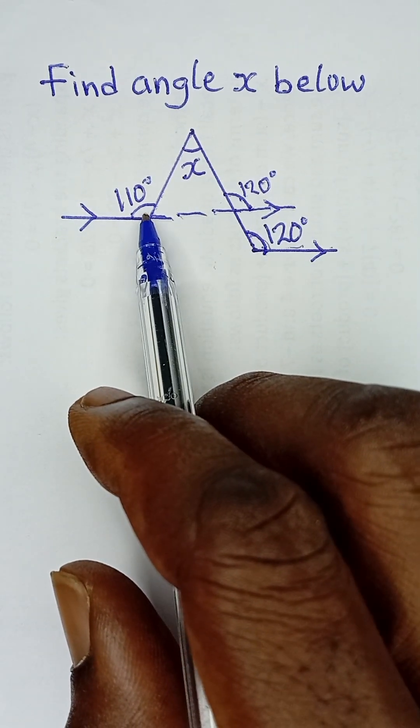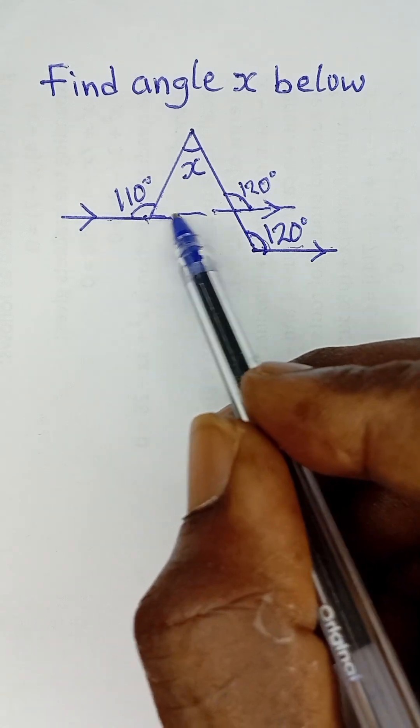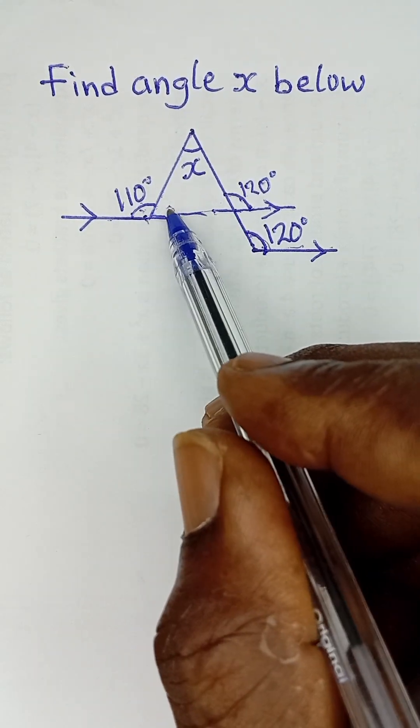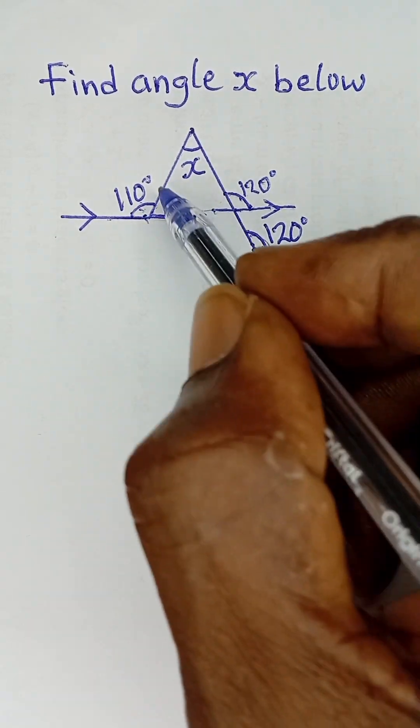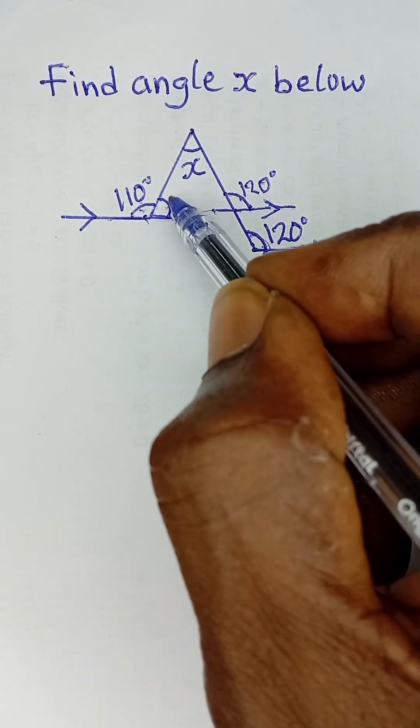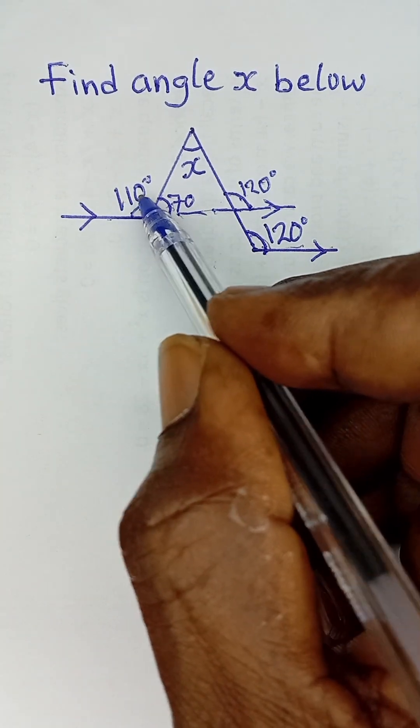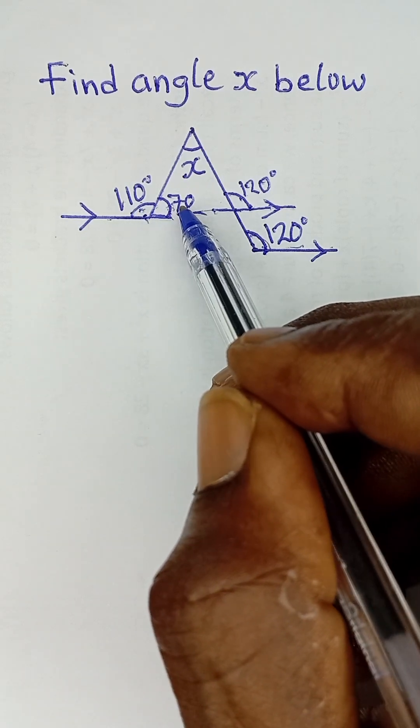Now coming to this part of the shape, this is 110 degrees and this is a straight line. The sum of angles on a straight line add up to 180 degrees, so if this is 110, it means this part is 70 degrees because 180 minus 110 gives us 70.